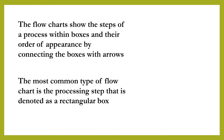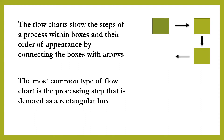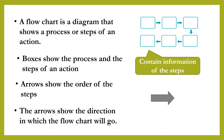The flow charts show the steps of the process within boxes and their order of appearance by connecting the boxes with arrows. The most common type of flow chart is the processing step that is denoted as a rectangular box. A flow chart, in simple words, is a diagram that contains information of the steps of an action.